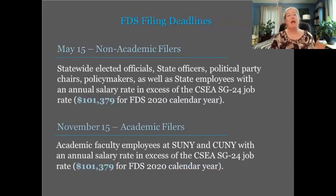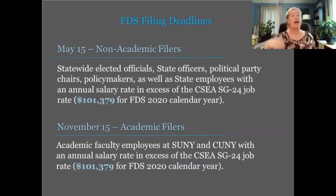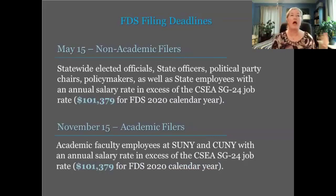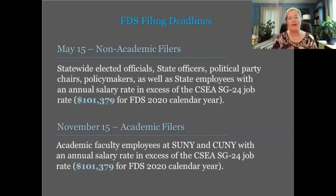Filing deadlines depend on which category your filers are in. There are two basic categories with completely different deadlines: academic filers and non-academic filers. The large majority of FDS filers are non-academic — your rank and file folks who are either policymakers or threshold filers — and their filing deadline is May 15th, one month after taxes are due. As I tell people in regular trainings, when your taxes are due in April, just leave your stack of financials on your desk, because in a few weeks you'll need to file your FDS.